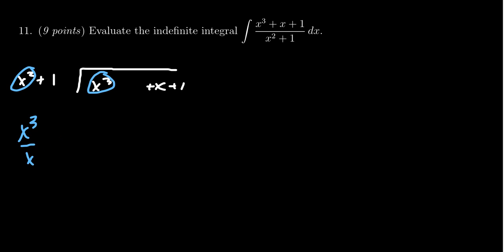We're going to record that on the top. Next, we're going to take x times our divisor, x squared plus 1. This gives us x cubed plus x, and we're going to record that below, and we're going to subtract that from above.